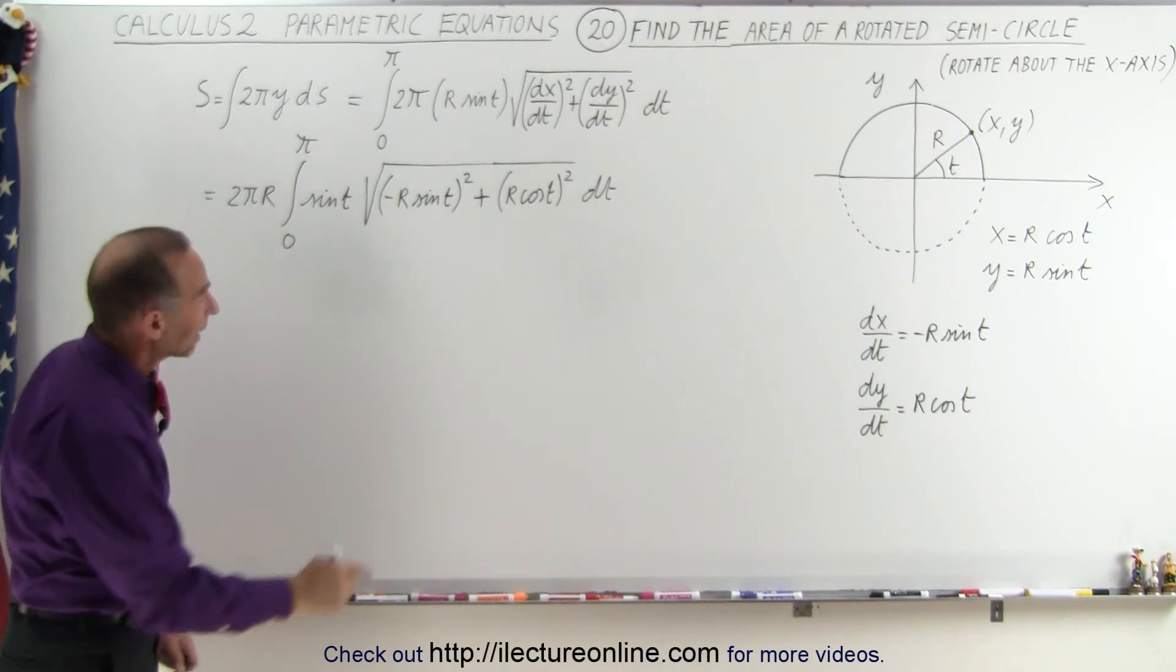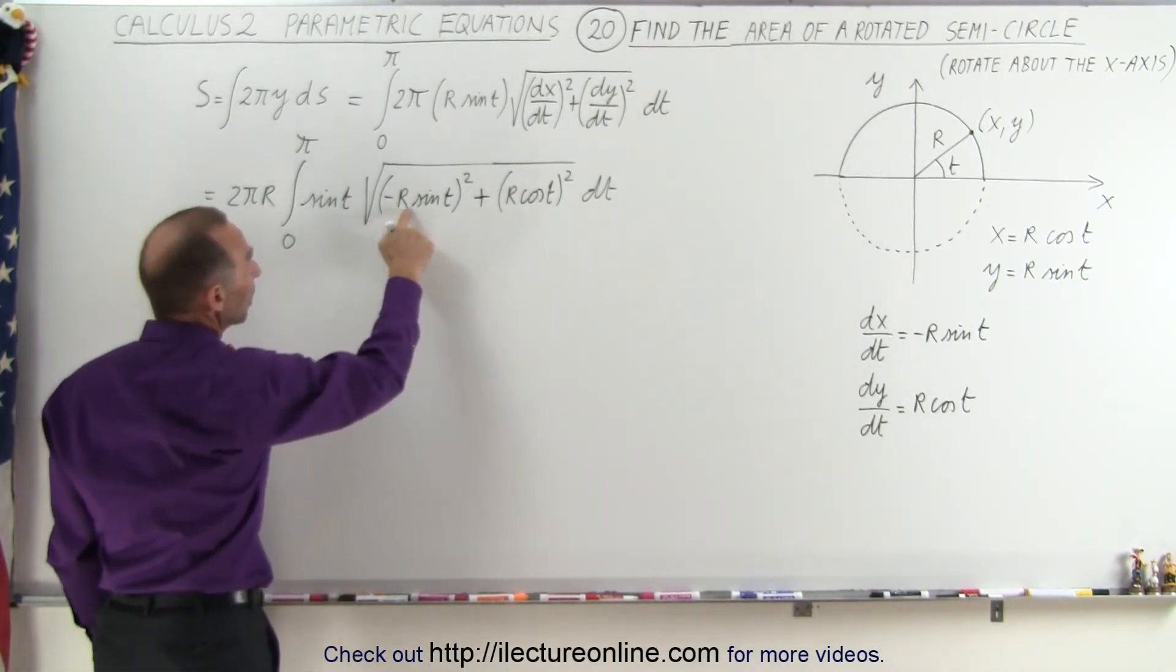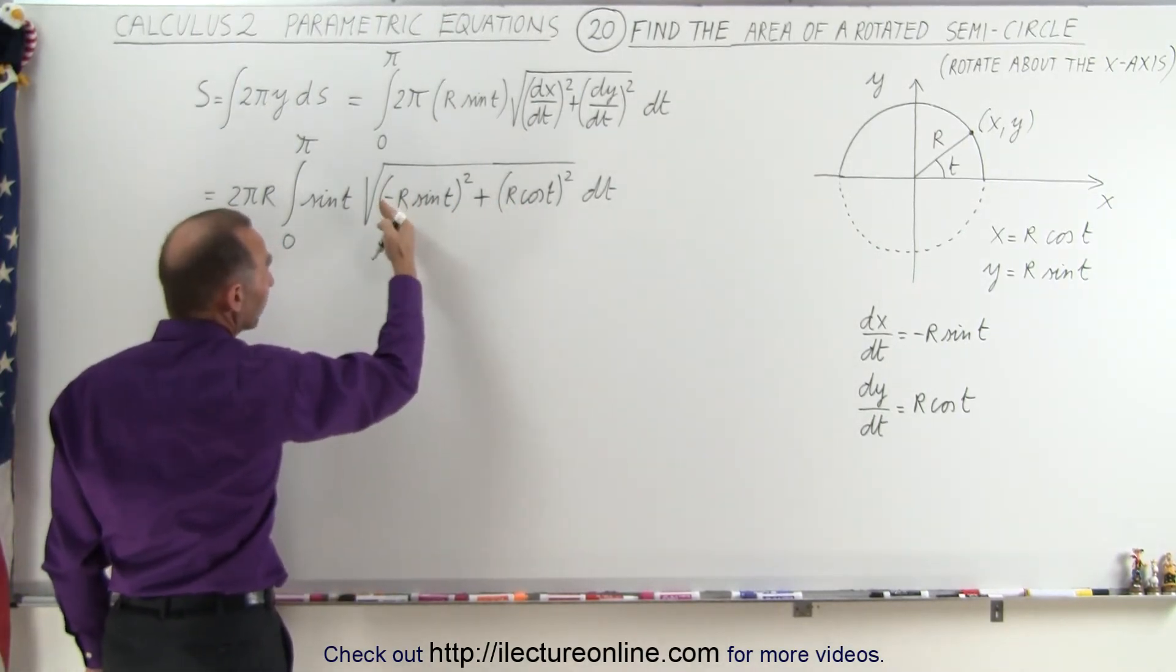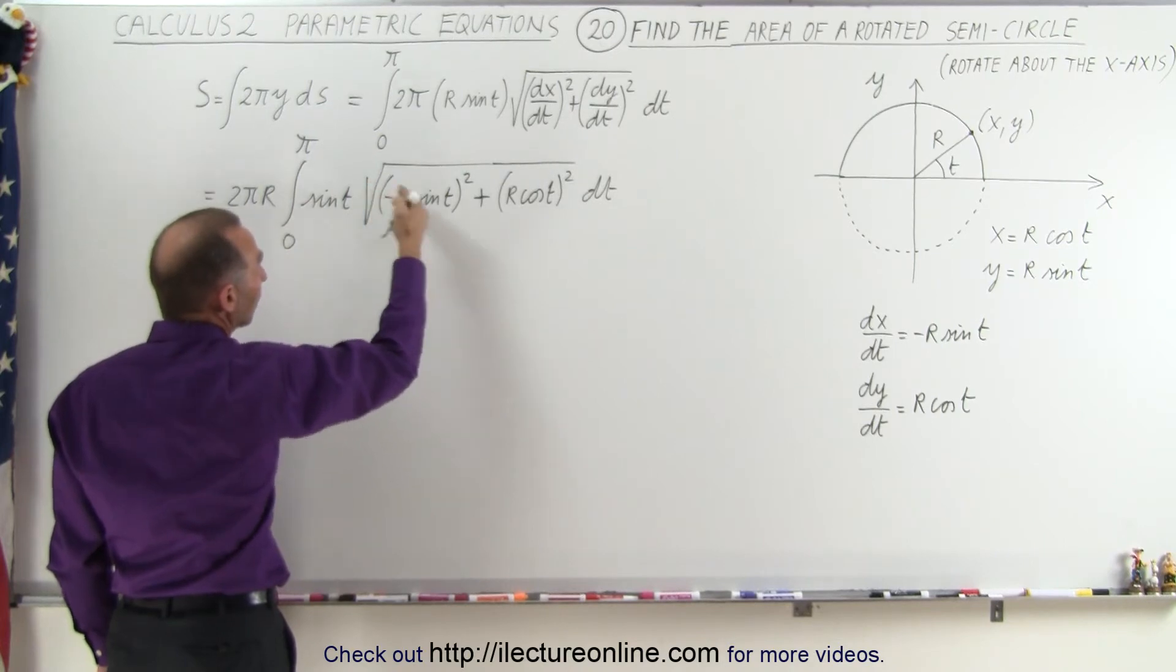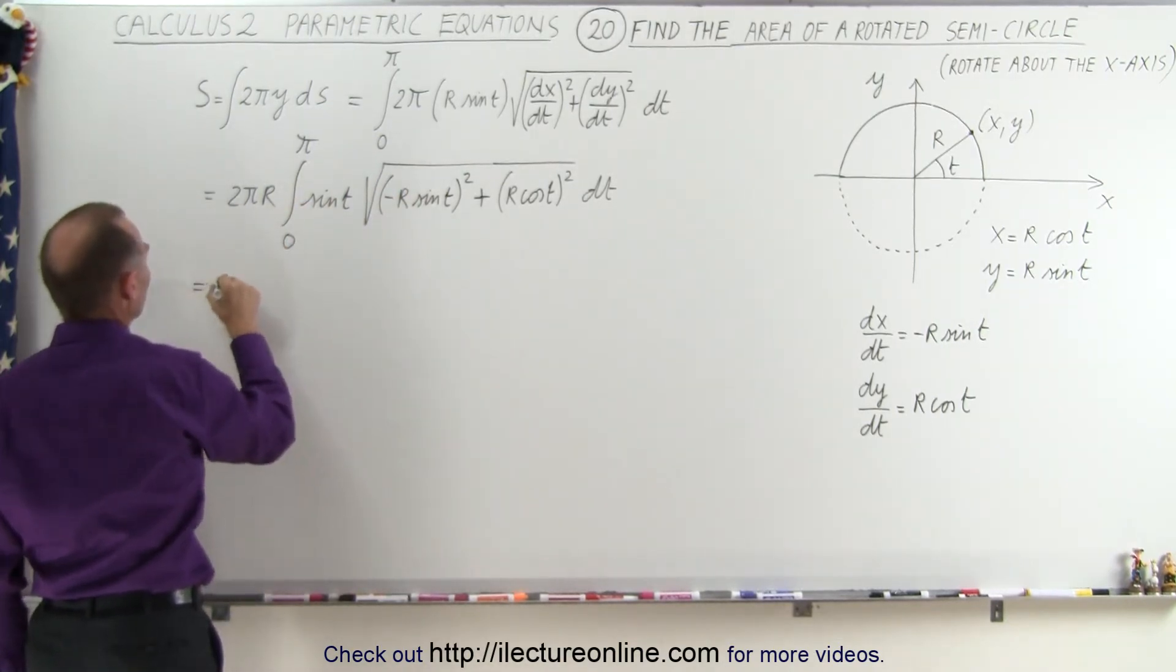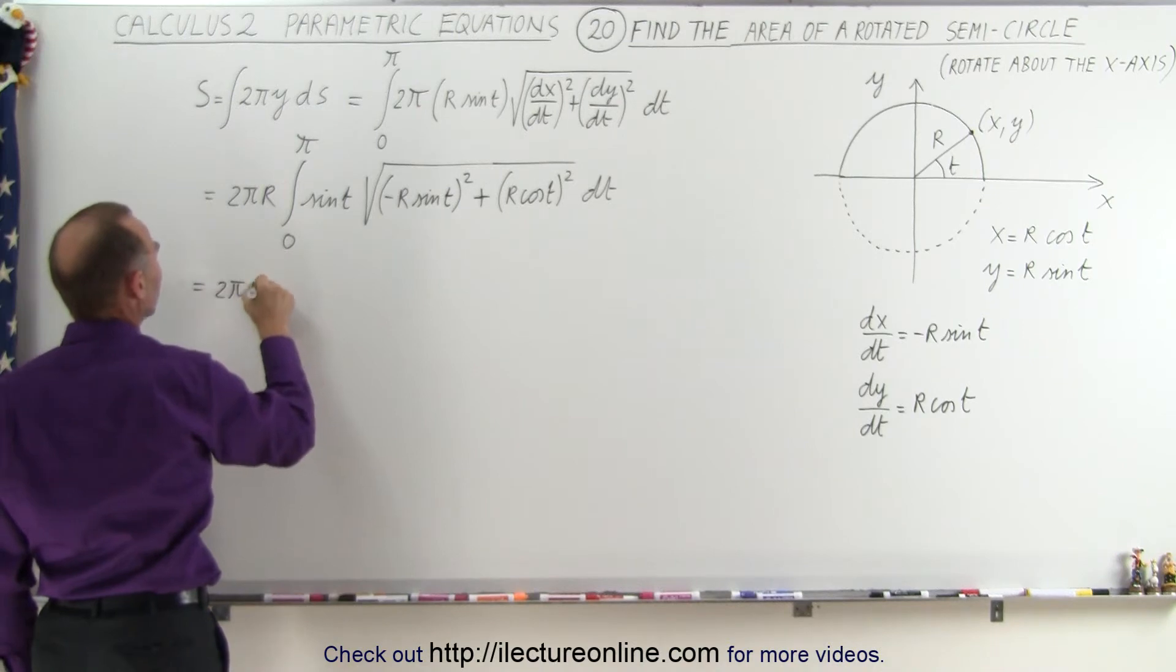Notice when we square that, the negative sign disappears. We have an r² and an r² that can be factored out. The square root of r² is r, so that comes over here. So this becomes 2πr².